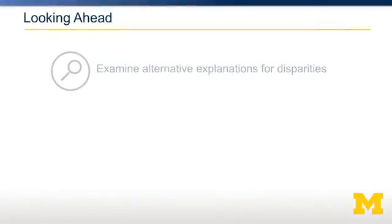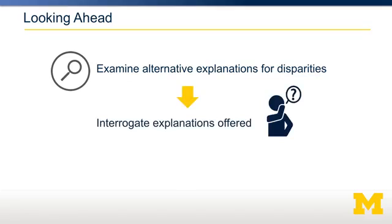So, why do we focus so much attention on the health care system to explain health when so many other factors are important? In this course, we are going to examine alternative explanations for disparities observed in health outcomes across different populations based on structural and other factors. It will be our job to interrogate explanations offered in readings reflecting behavioral, psychological, and structural factors that contribute to inequalities in health.